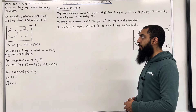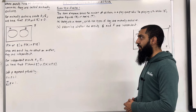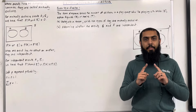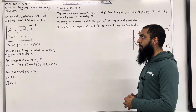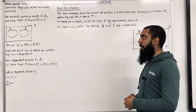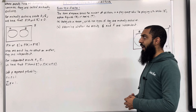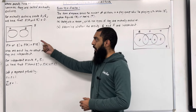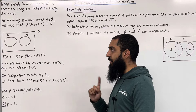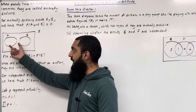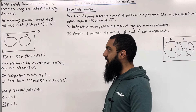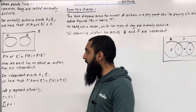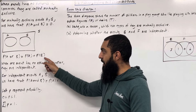When events have no outcomes in common, they are called mutually exclusive. In other words, mutually exclusive events are events that cannot happen at the same time. For mutually exclusive events A and B, we have that the probability of A and B is equal to 0. This is illustrated by the Venn diagram, where there is no overlap between event A and event B. For mutually exclusive events A and B, the probability of A or B is given by probability of A plus probability of B.